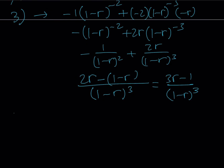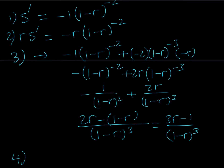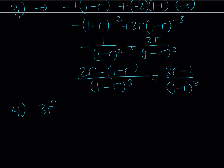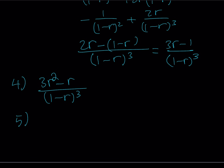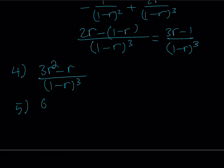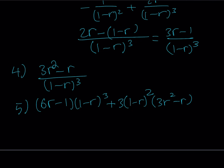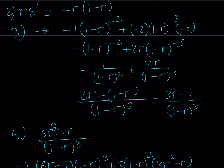Step 5, differentiating 3r squared minus r over 1 minus r cubed using the quotient rule: the derivative of the numerator is 6r minus 1, multiplied by the denominator, minus the derivative of the denominator — which is 3 times 1 minus r squared times negative 1, turning it positive — multiplied by the numerator 3r squared minus r. All over 1 minus r to the third power. This should be our final answer after simplification.